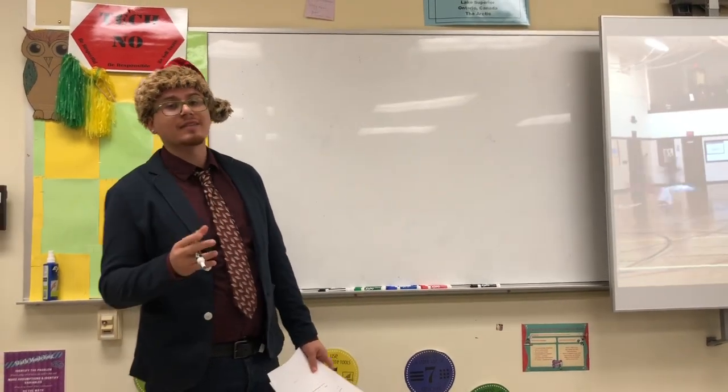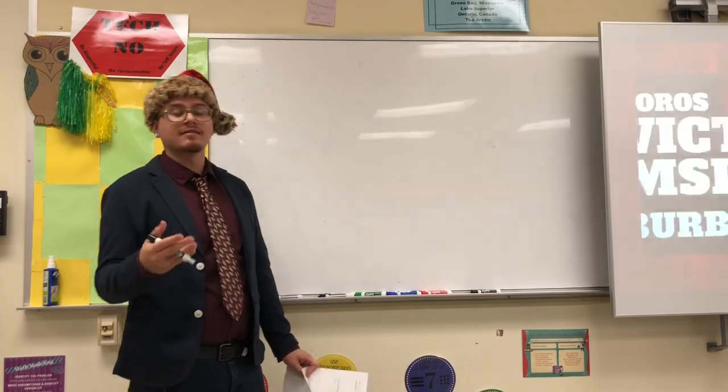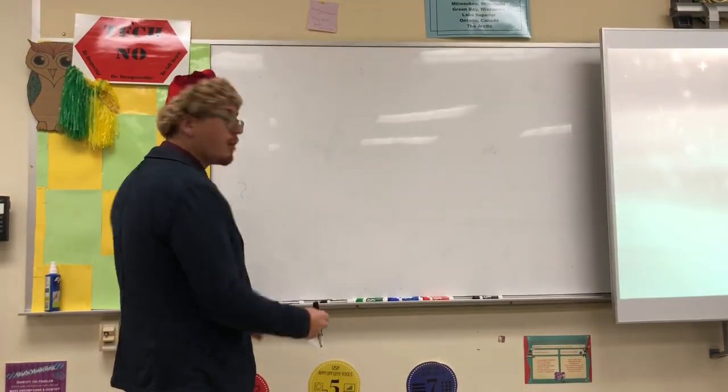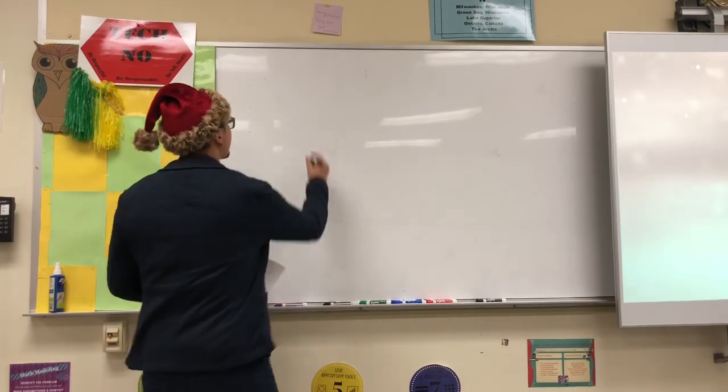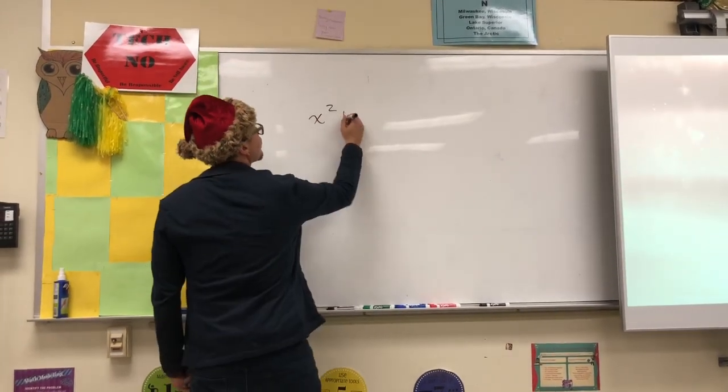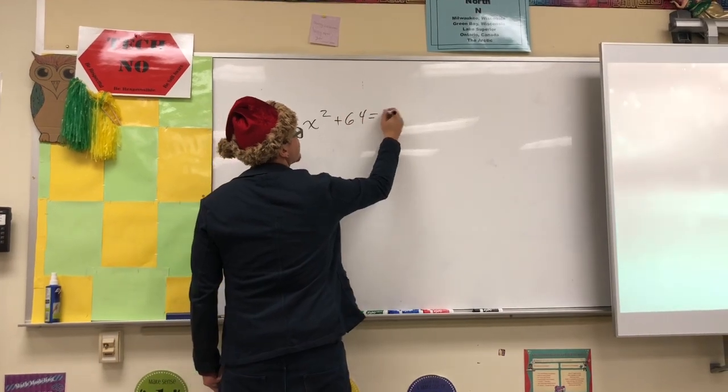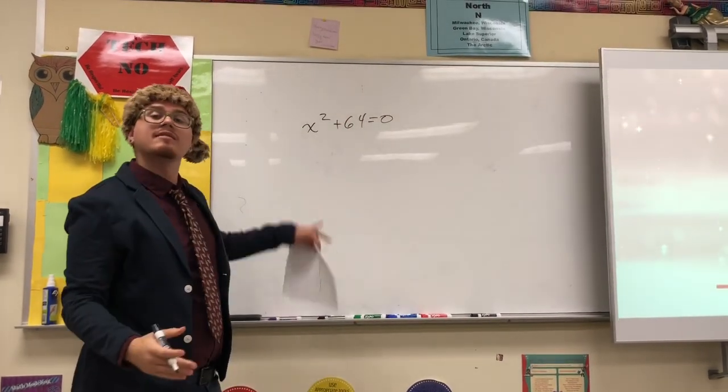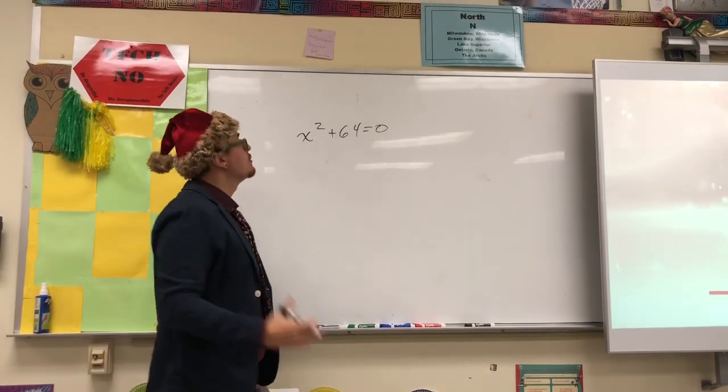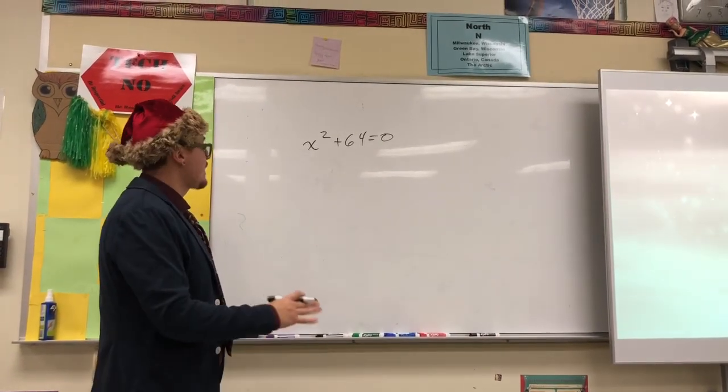We need to talk about quadratic relationships and how to solve for the roots. So the first thing we're going to do is solving by taking the square root. Basically, you can take a square root anytime you are given an x squared. Taking the square root is the inverse operation to squaring. So when you take the square root, you get rid of the square, so it becomes just x.